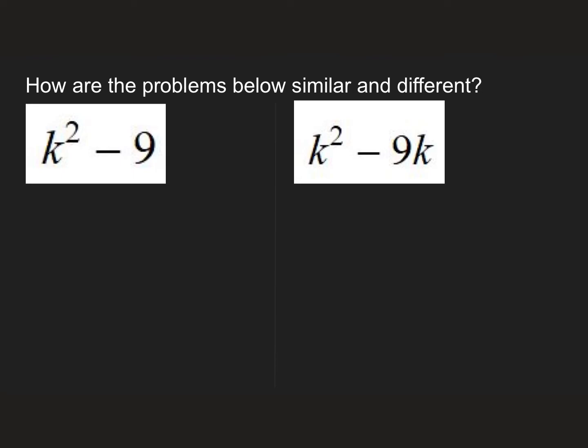The next question says, how are the problems similar and different? Now, similarity-wise, we can see that these are both missing a term. They only have two terms. However, the term they're missing is different. Because we know that in a general form, we want it to be something x² plus something x plus a number. In this case, I'm missing the middle term of 0k. However, in this case over here, I'm missing the last term of plus 0.